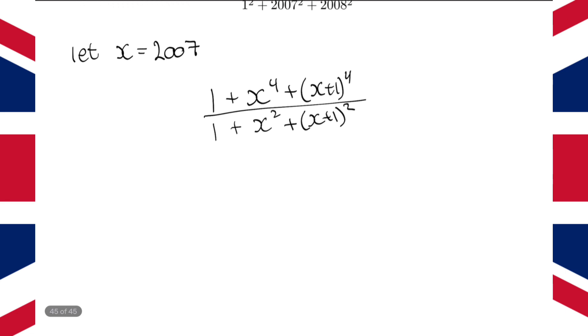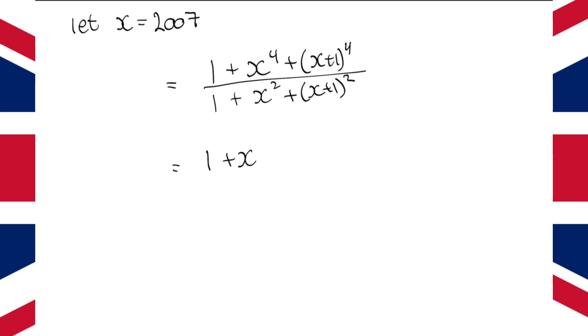So, let's expand the numerator and the denominator. We're going to get 1 plus x to the power 4, plus, expanding x plus 1 to the power 4 using the binomial theorem, we get x to the power 4 plus 4x cubed plus 6x squared plus 4x plus 1. And we are dividing this by 1 plus x squared plus x plus 1 squared is x squared plus 2x plus 1.